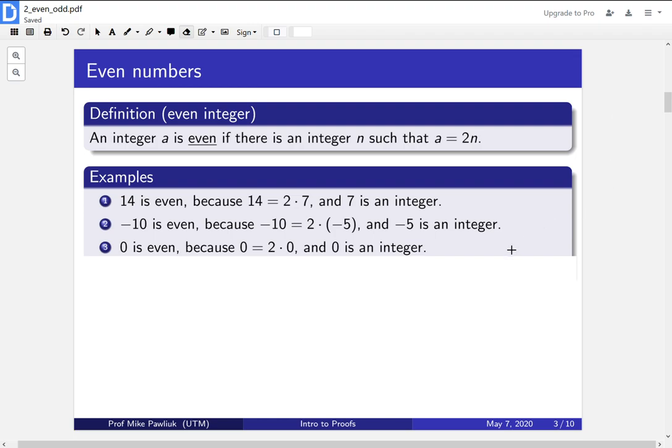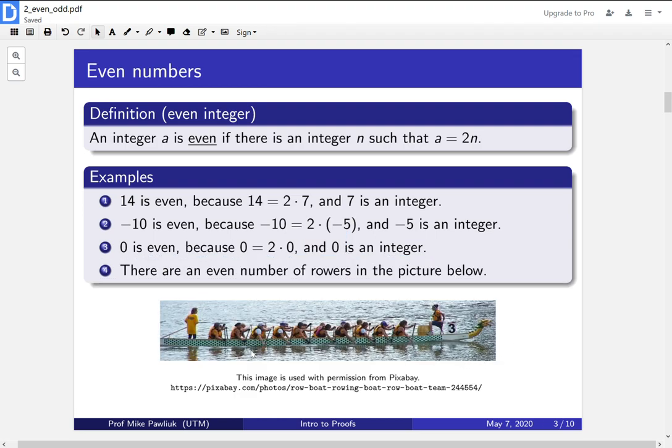I want to show a slightly bigger example that demonstrates how this definition is useful even when we can't necessarily find this n. Here's a picture of rowers on a boat. We've got a person at the front and back, and pairs of rowers here with one on each side of the boat. There are an even number of rowers here and we can figure that out without actually counting them. Our goal is to show that the total number of rowers is 2 times something, and we can see they all come in pairs. So we don't need to count how many pairs there are. We know it's 2 times something. This is enough to give us that there's an even number of rowers in the picture.